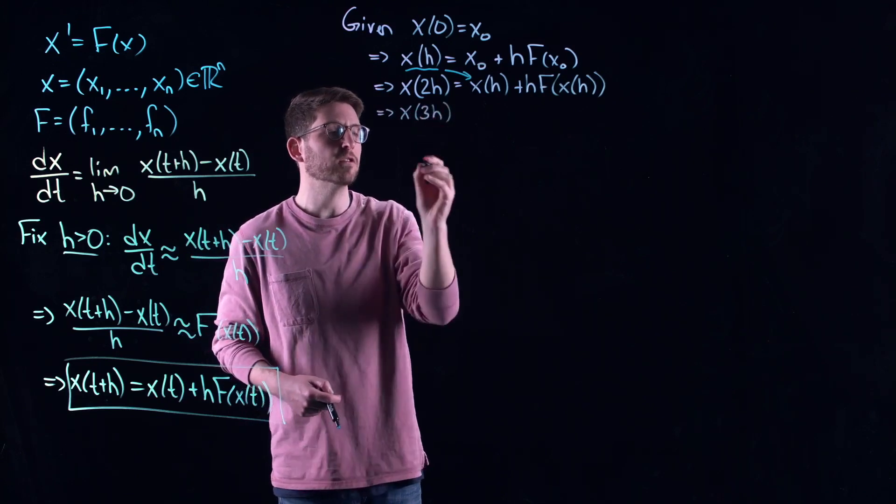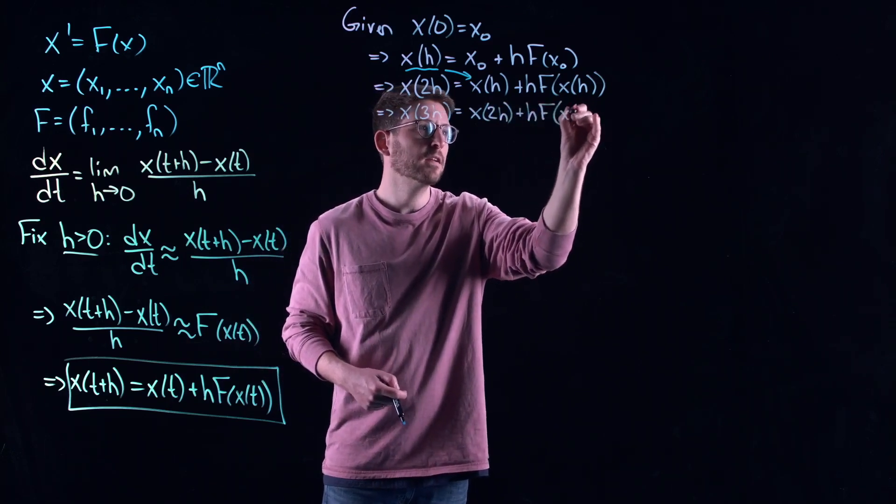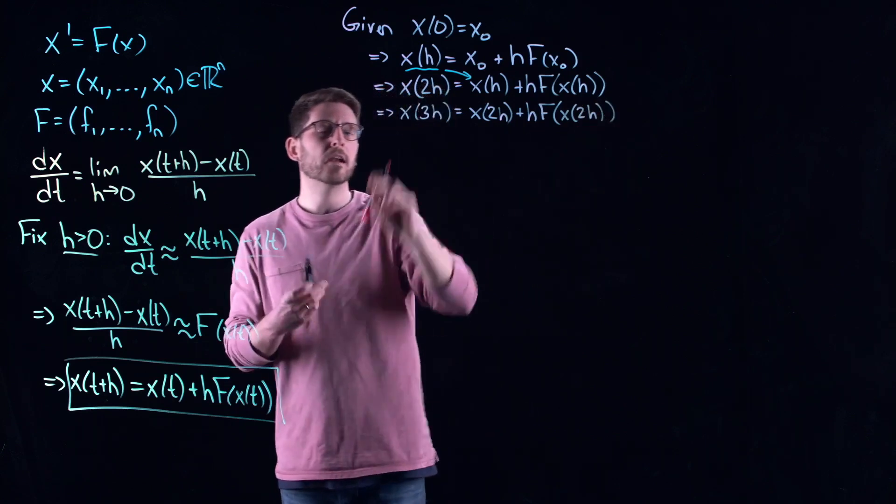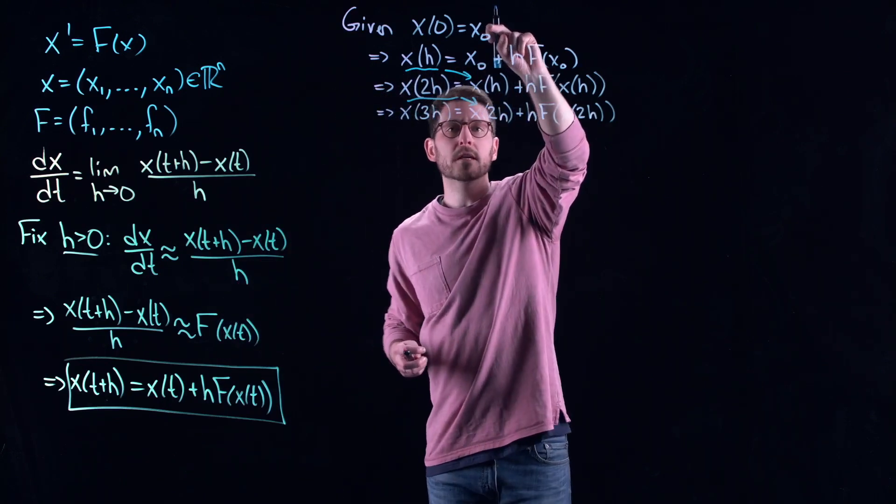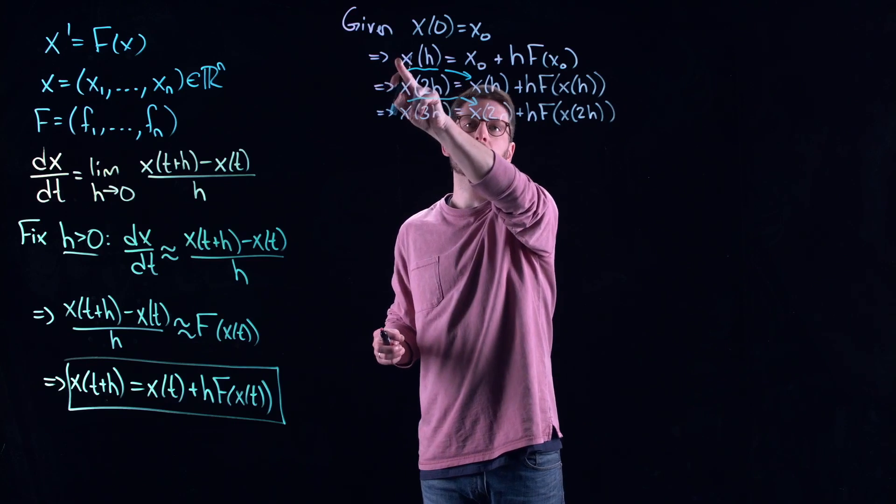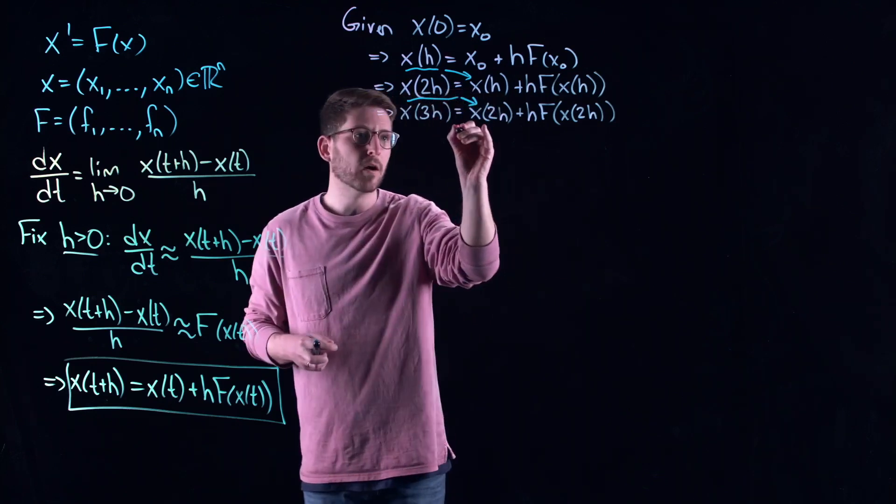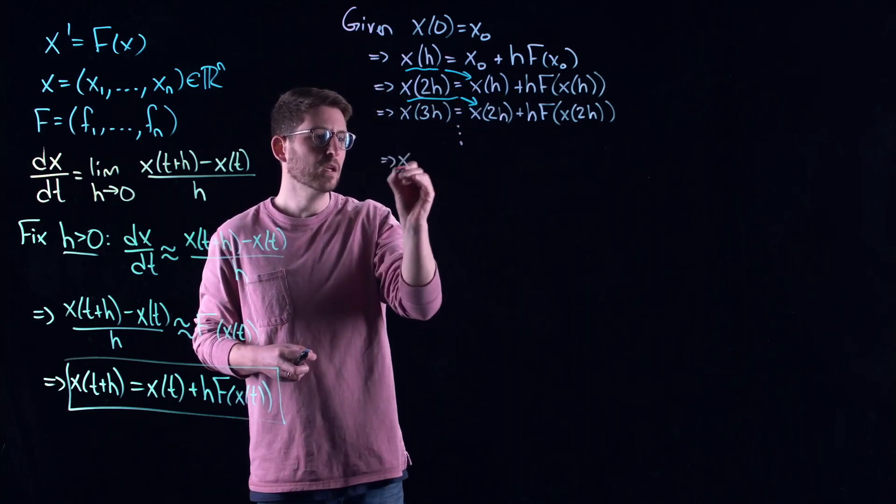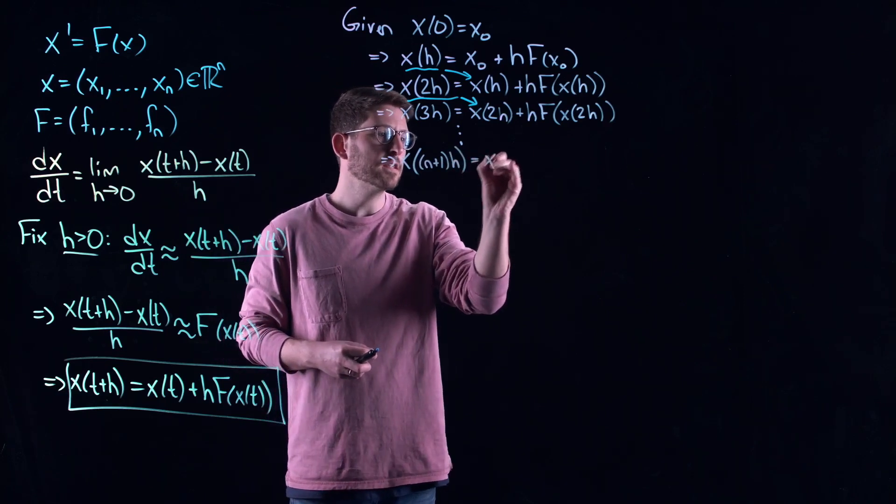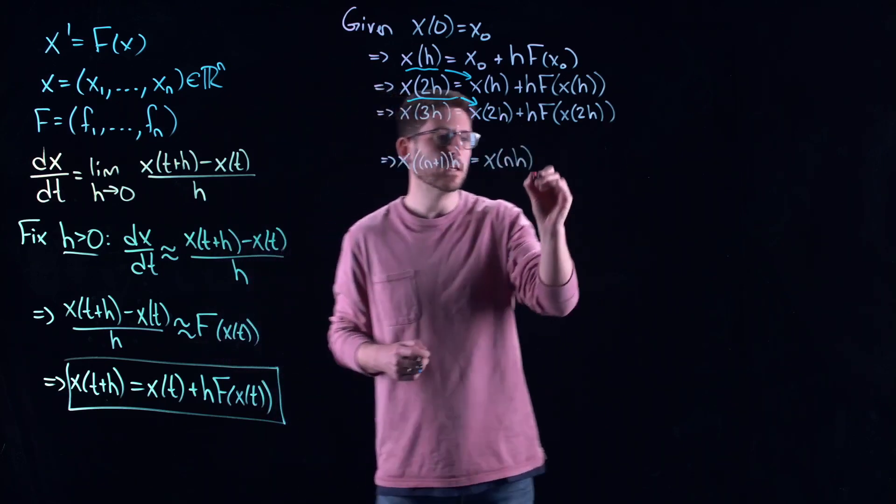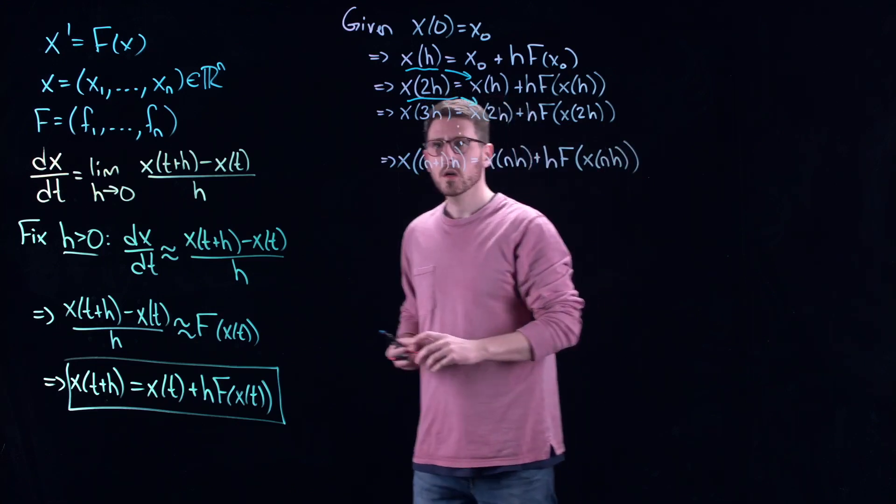We actually do know what happens at one point in time, and that's when t is equal to zero. Then, through this Euler step, that would tell me that x of h is x of zero plus h f of x of zero. This would also give me, if I wanted to push forward again by another unit of h, x of two h equals whatever happened previously plus this derivative component.